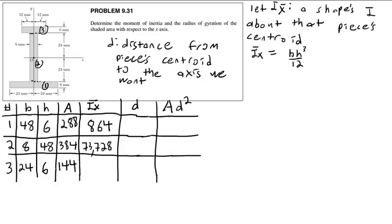For piece three: 6 cubed times 24 divided by 12 equals 432.